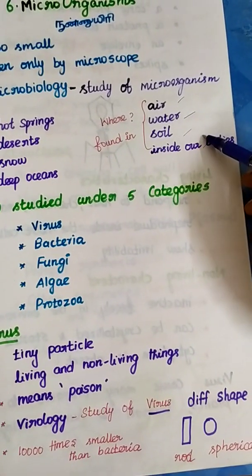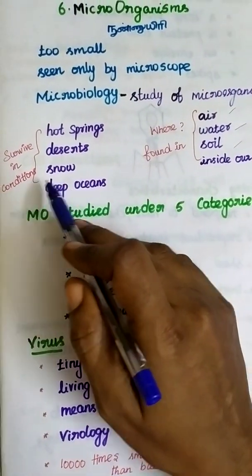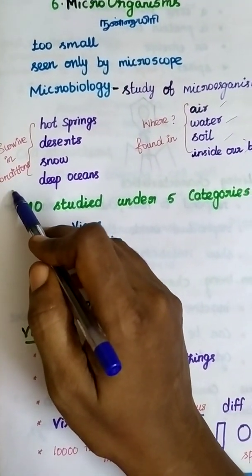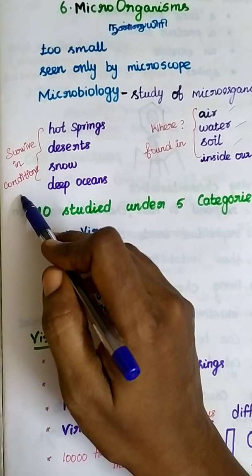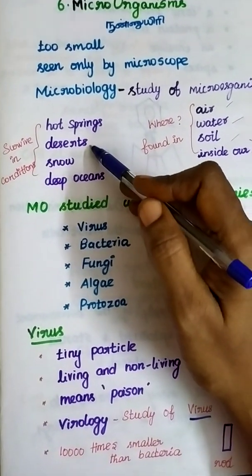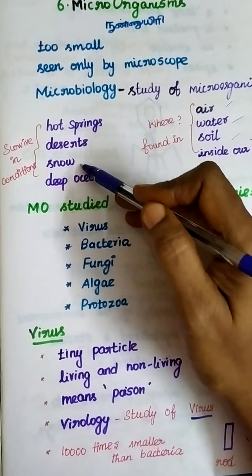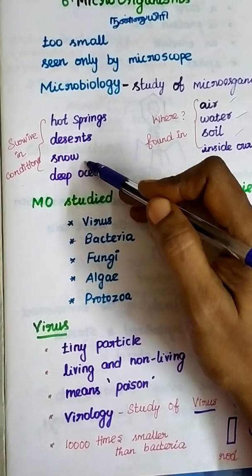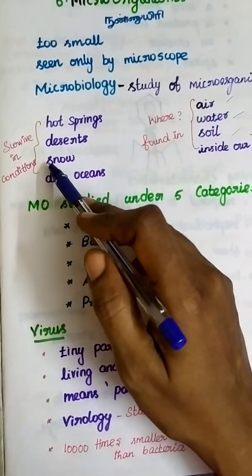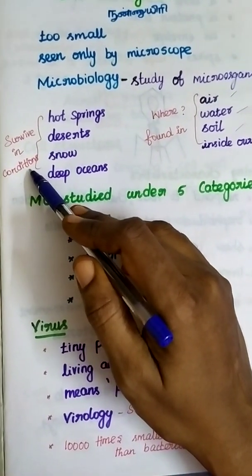Micro-organisms can survive in various conditions: hot springs, desert, snow, and deep oceans. They can survive in all kinds of conditions.